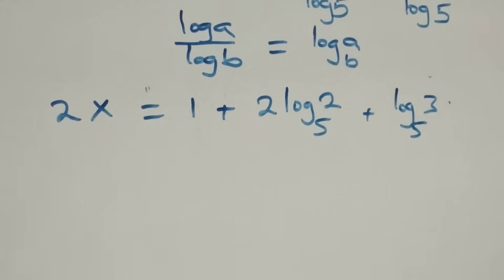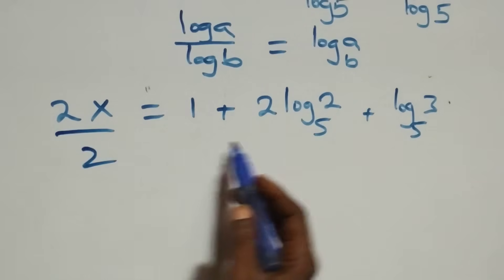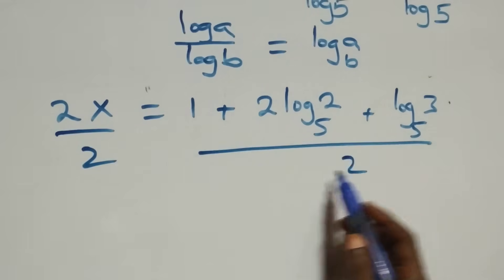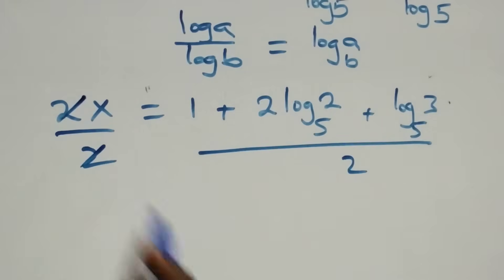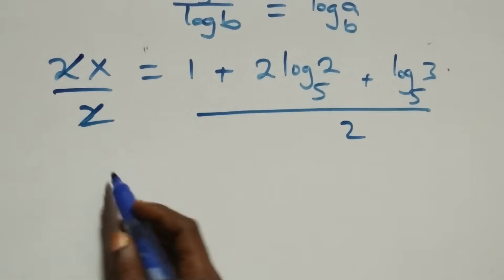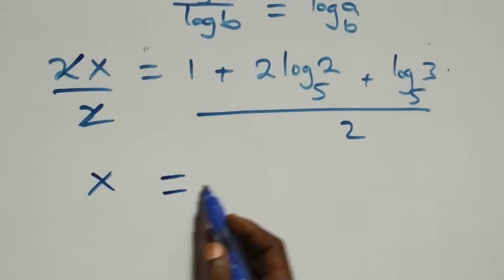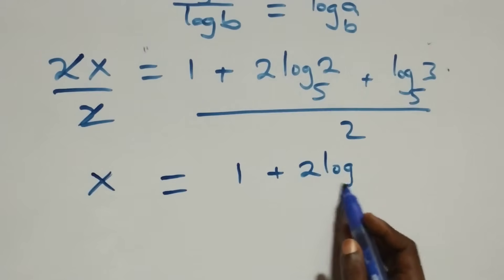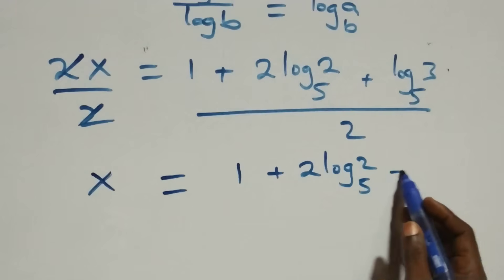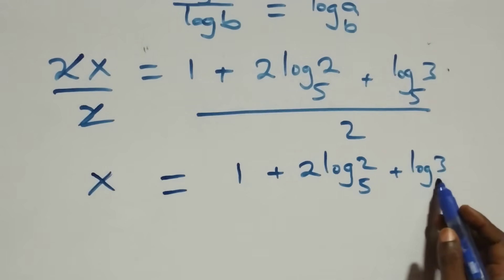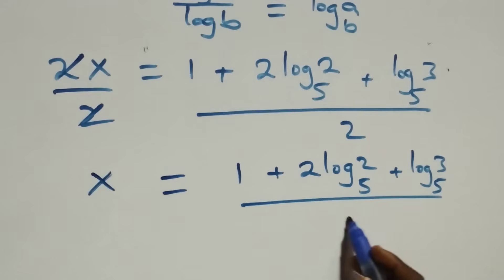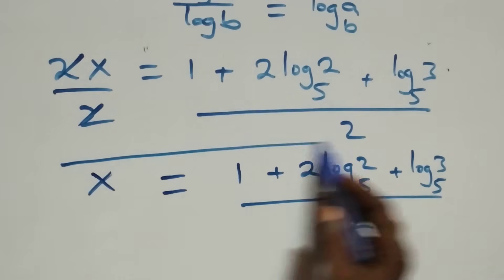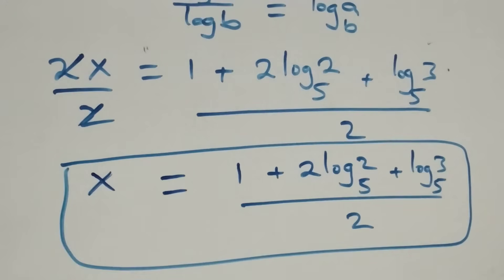We then divide both sides by 2. Dividing both sides by 2, the 2 cancels, and we are left with x equals (1 plus 2·log₅2 plus log₅3) all over 2. So the value of x is (1 plus 2·log₅2 plus log₅3) over 2.